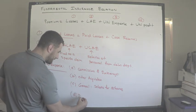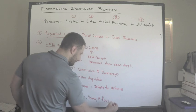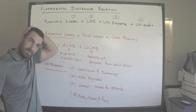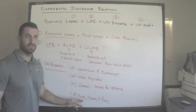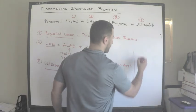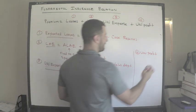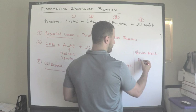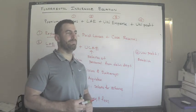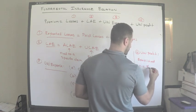Finally under underwriting expenses, we have taxes, licenses, and fees — payments that must be made at inception of a policy. Insurance companies need licenses to do business, and they pay various fees and taxes, though federal income taxes are not included here. Number four: underwriting profit. As mentioned, this is usually established as a percent of premium, based on a model such as an internal rate of return model or a net present value of cash flows model.